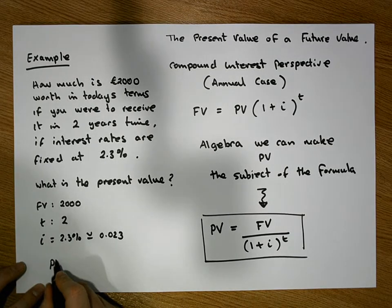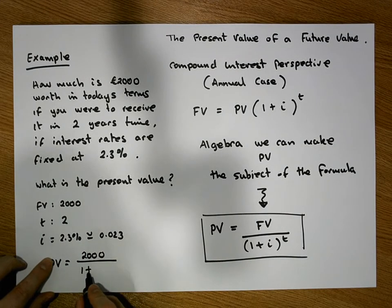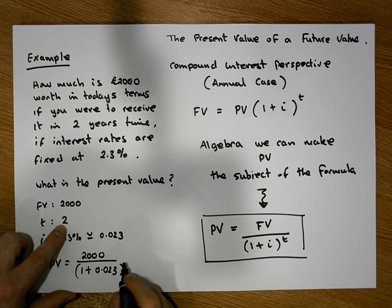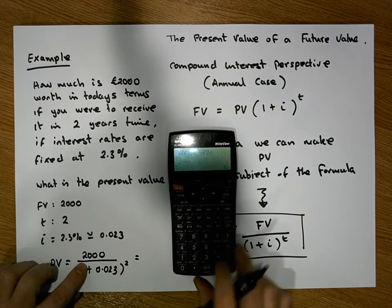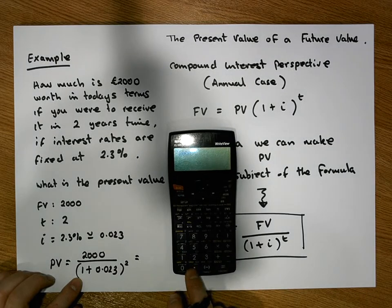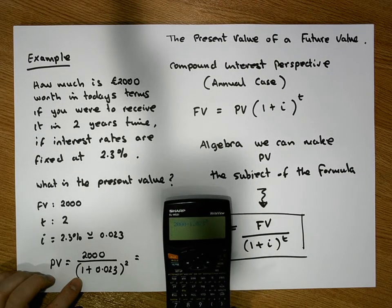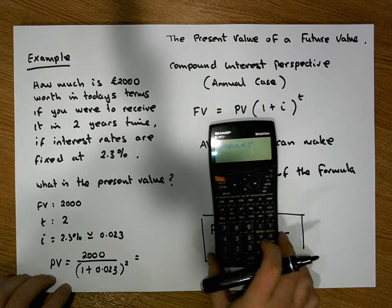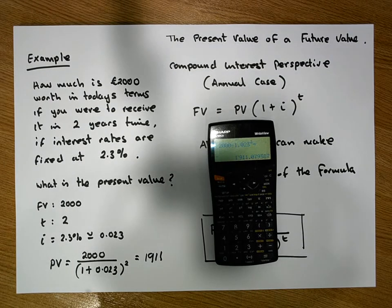The present value equals the future value of 2000 euros divided by 1 plus the interest rate 0.023, raised to the power of 2 — the number of years we need to discount by. On the calculator: 1 plus 0.023 is 1.023, and that needs to be squared. So we have 2000 divided by 1.023 raised to the power of 2, which gives us a value of 1911 euros.